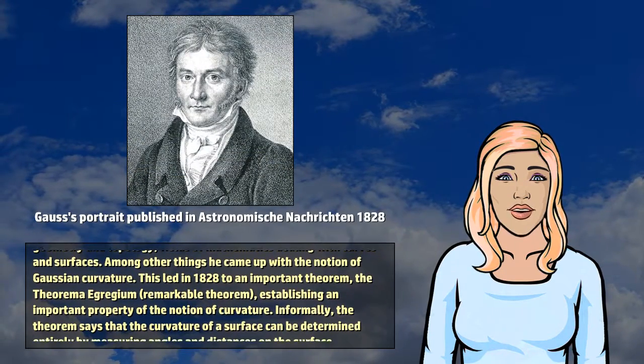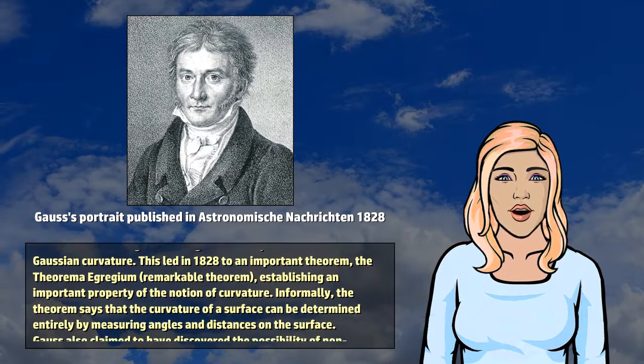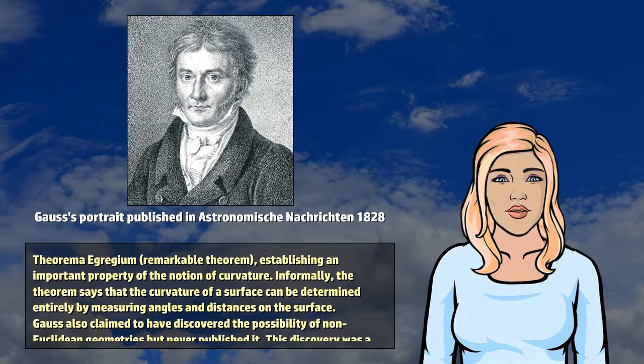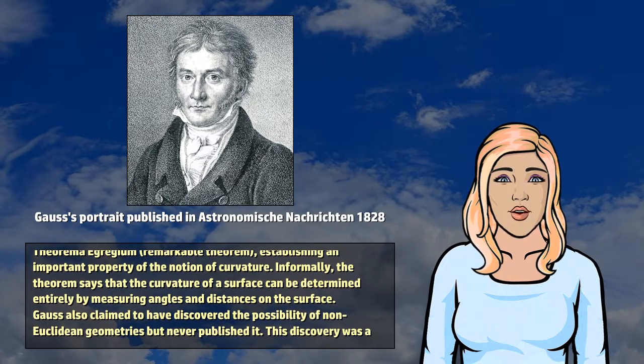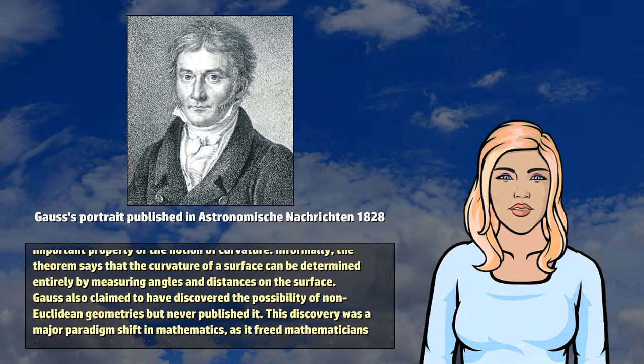This led in 1828 to an important theorem, the theorem egregium, remarkable theorem, establishing an important property of the notion of curvature. Informally, the theorem says that the curvature of a surface can be determined entirely by measuring angles and distances on the surface.